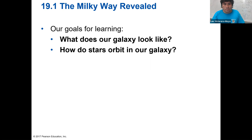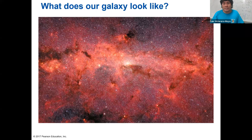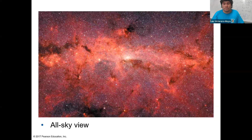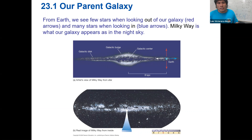What does our galaxy look like and how do the stars orbit in it? If you look through a telescope you'd see an all-sky view. As an illustration it looks like that — it's a representation. We see a few stars, part of the galactic disk, and in some cases we can see the galactic center.